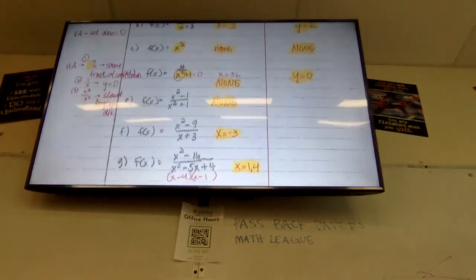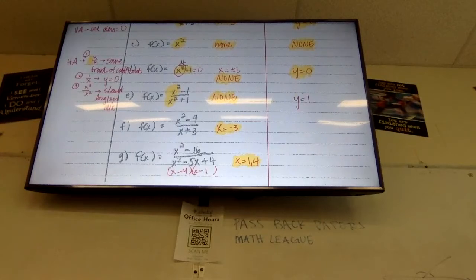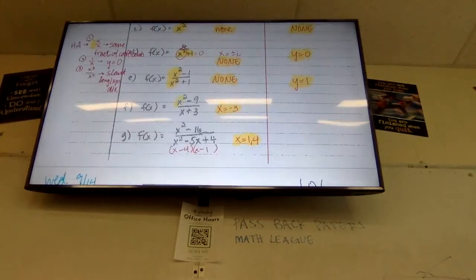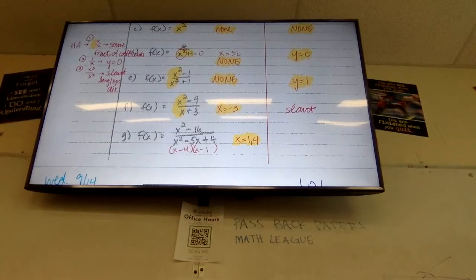Letter E — what's my asymptote? One. They're x squares now, but that doesn't matter — I only care about the coefficients. Y equals 1. Letter F — that's a slant, because I've got x squared over x. We'll just write slant for now and come back to that in chapter two. And letter G? Y equals 1. Excellent job.